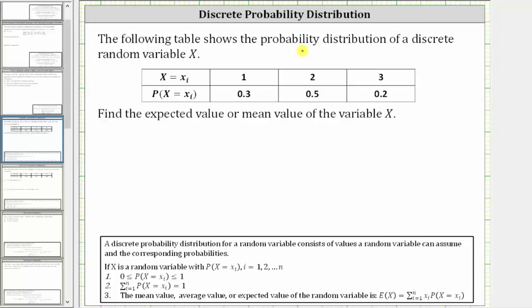The following table shows the probability distribution for discrete random variable x. We are asked to find the expected value or mean value of the variable x.